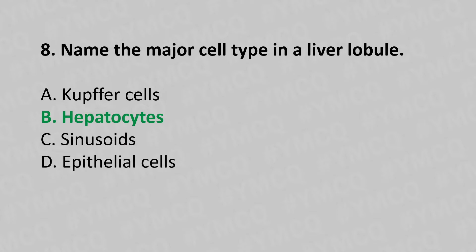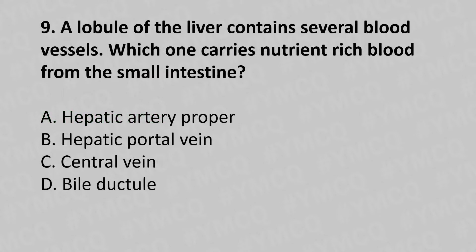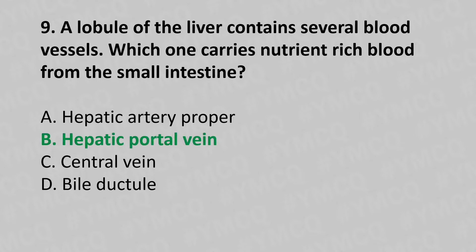Now let's move to question number 9. A lobule of the liver contains several blood vessels. Which one carries nutrient-rich blood from the small intestine? Option A: Hepatic artery. Option B: Hepatic portal vein. Option C: Central vein. Option D: Bile ductile. And the answer is Option B: Hepatic portal vein.